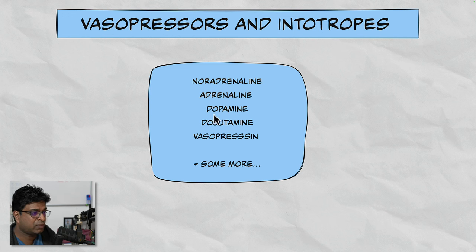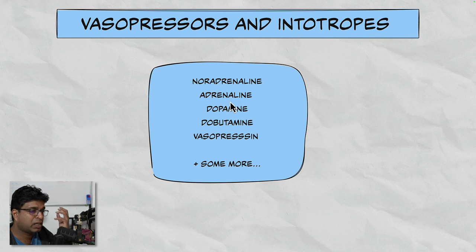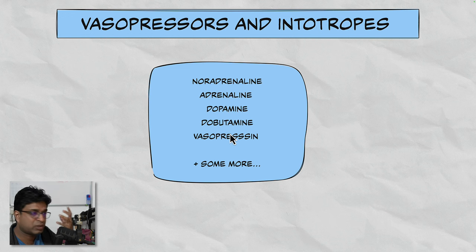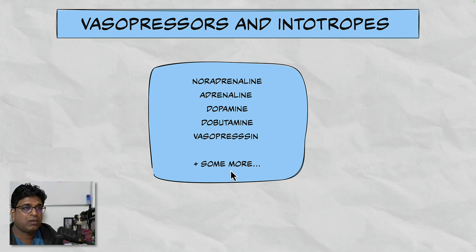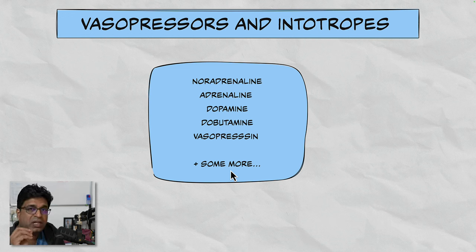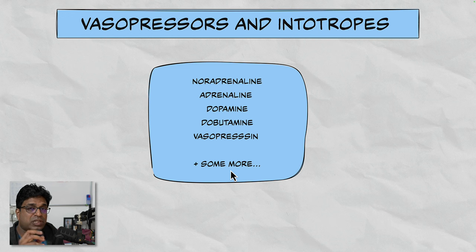Whenever we say vasopressors and inotropes, these four or five things immediately come to mind: noradrenaline, adrenaline, dopamine, dobutamine, and vasopressin. These are the most common ones, and we'll see some more. One important question to ask is: why do we require vasopressors and inotropes? Basically, they are required to treat shock.